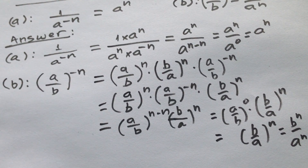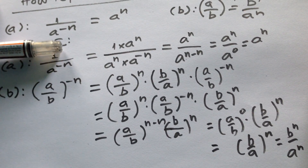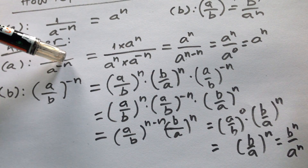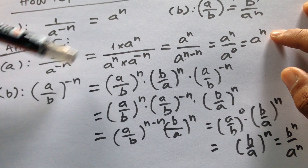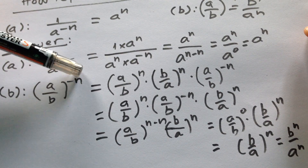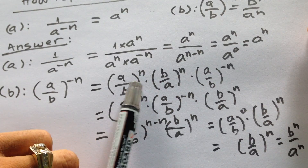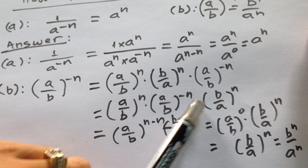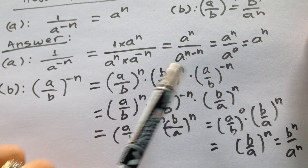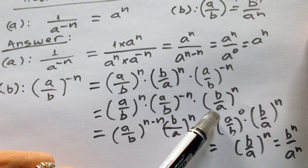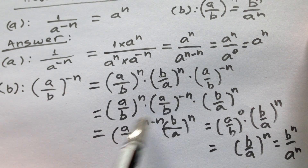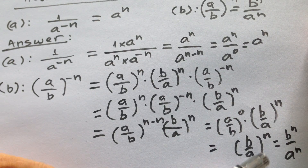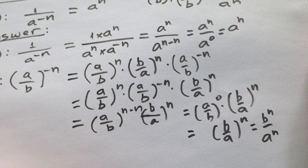To review: 1 divided by a to the power minus n on the left hand side, we would like to make it equal to the right hand side a to the power n. So 1 divided by a to the power n minus n equals a to the power n. And then for part b, a divided by b to the power minus n — we multiply by the reciprocal, so a divided by b to the power minus n, associated with b divided by a to the power n, gives 0 in the exponent, and then it equals b to the power n divided by a to the power n.